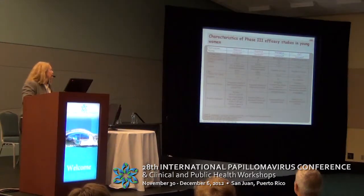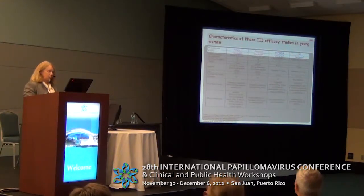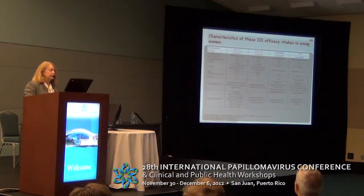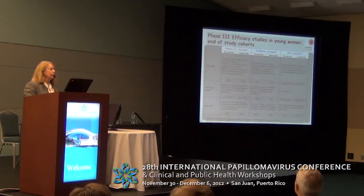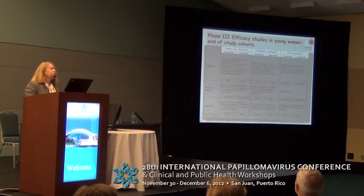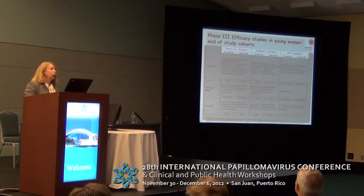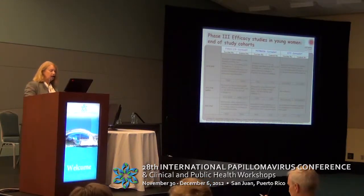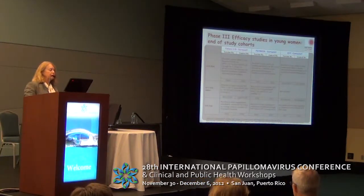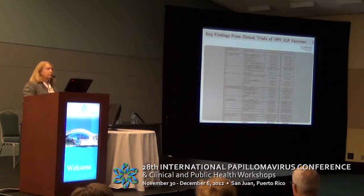If you look at the characteristics — you probably can't read this from the back — I suggest you look in your book at the differences in terms of population characteristics and primary endpoints. There is some different terminology, whether we're looking at according-to-protocol or per-protocol population, between whether we're looking at the bivalent or the quadrivalent. The table also gives you the large numbers of subjects that were looked at in the trials.